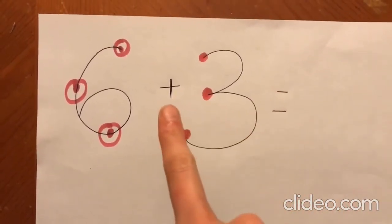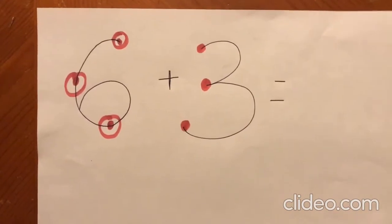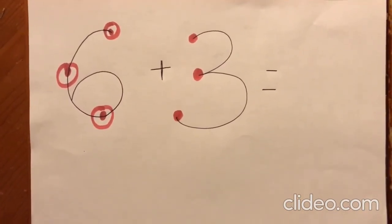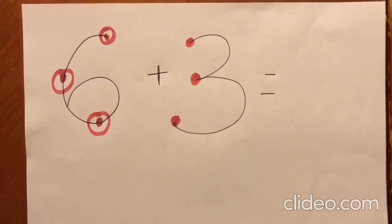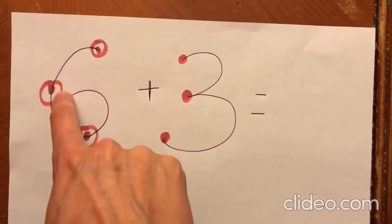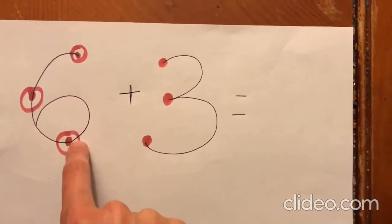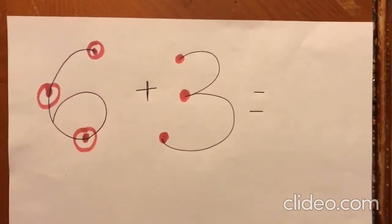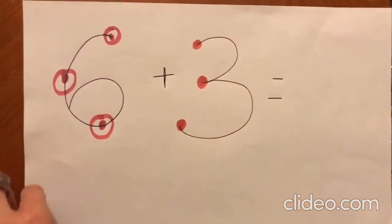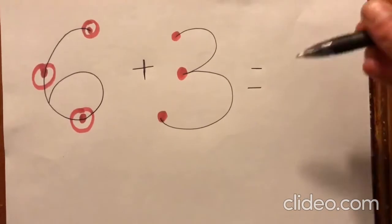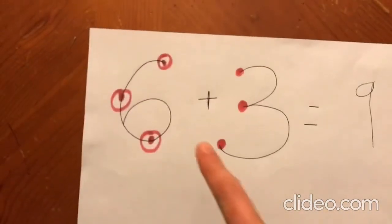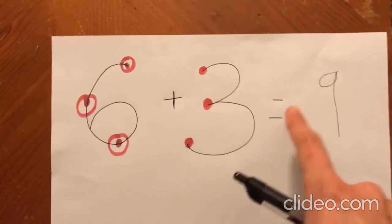When you see the plus sign between two sets, you count the touch points on both numbers and write how many there are in all. Let's count: 1, 2, 3, 4, 5, 6. Now we're going to keep counting on the next number: 7, 8, 9. 6 plus 3 equals 9.